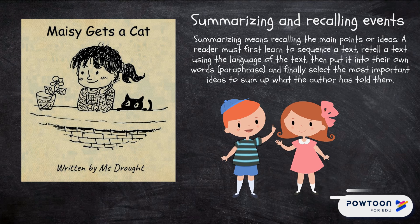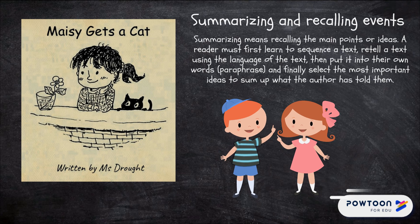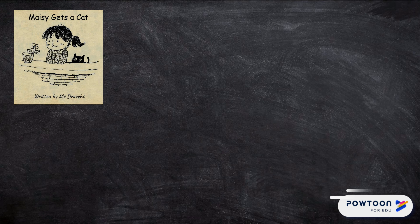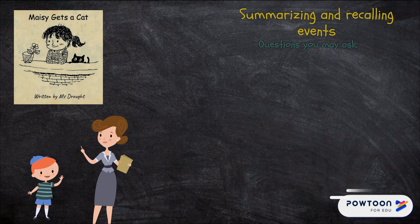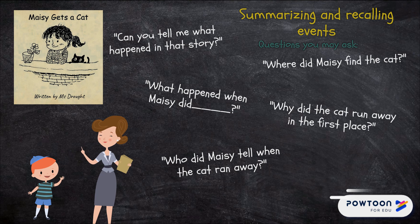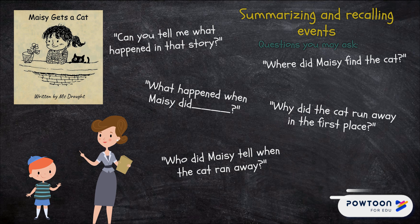Summarising: retelling the main parts or ideas. When reading, we must first learn to sequence a text, retell using language of the text, and finally select the most important ideas to sum up what the author has told us. Can you tell me what happened in the story? What happened when Maisie did that? Where did Maisie find the cat? Why did the cat run away in the first place?